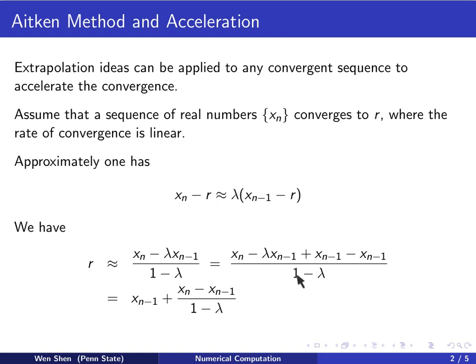After taking that out, we just get 1 minus lambda which cancels to 1 minus lambda in the denominator. Therefore we get a term Xn minus 1. And then we collect the remaining two terms here in the numerator and then repeat the denominator.